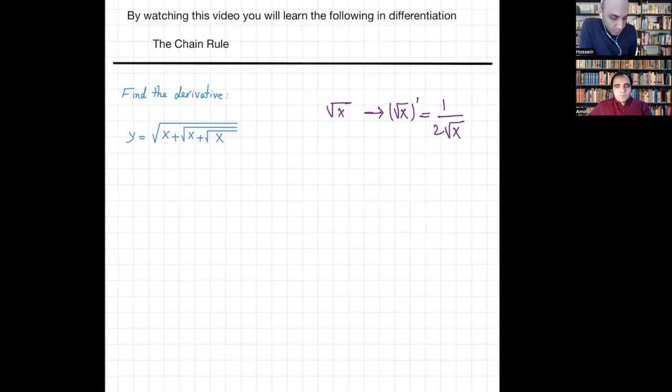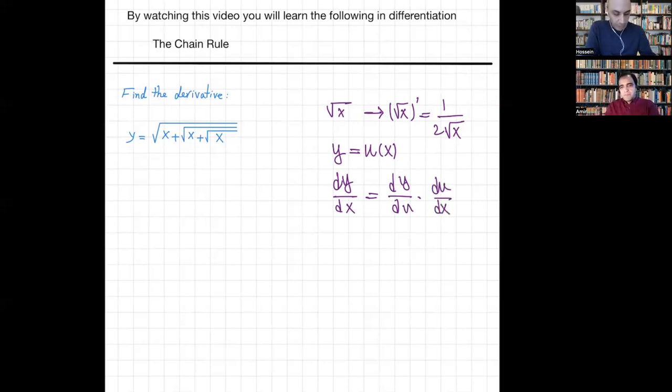And the chain rule, if we have y equals u, and then u is a function of x, then based on the chain rule, if we wanted to get the derivative dy with respect to x is equal to dy over du times du over dx. That's the general chain rule. So I'm going to use these two rules here to solve this problem.